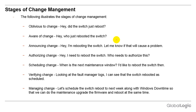Stages of change management. We are always doing so many changes in our regular infrastructure to provide better services to our clients and users. Many times we are oblivious to change — we don't know what changes are going on. For example, we were working and all of a sudden the network goes off. We go to the department and ask: did the switch just reboot? This is being oblivious to change — it happened but nobody knows.